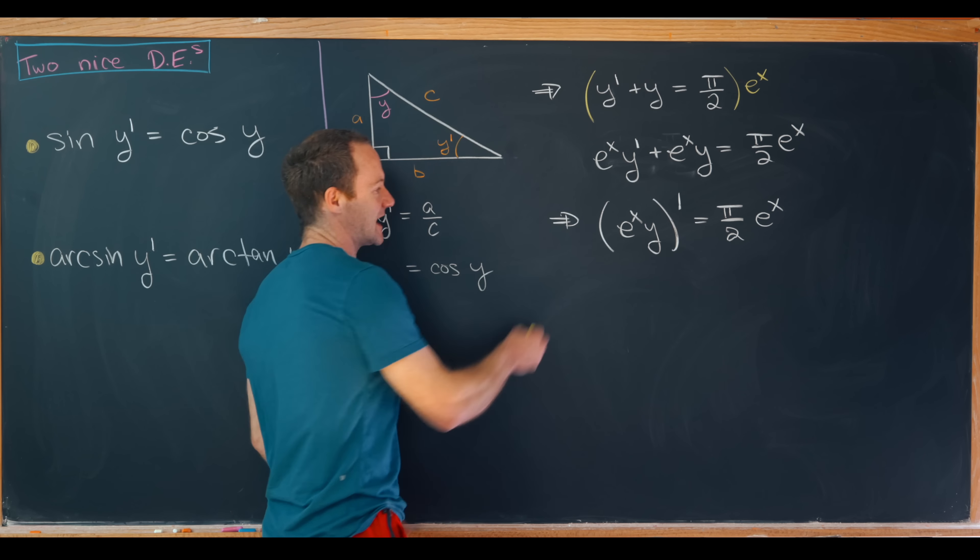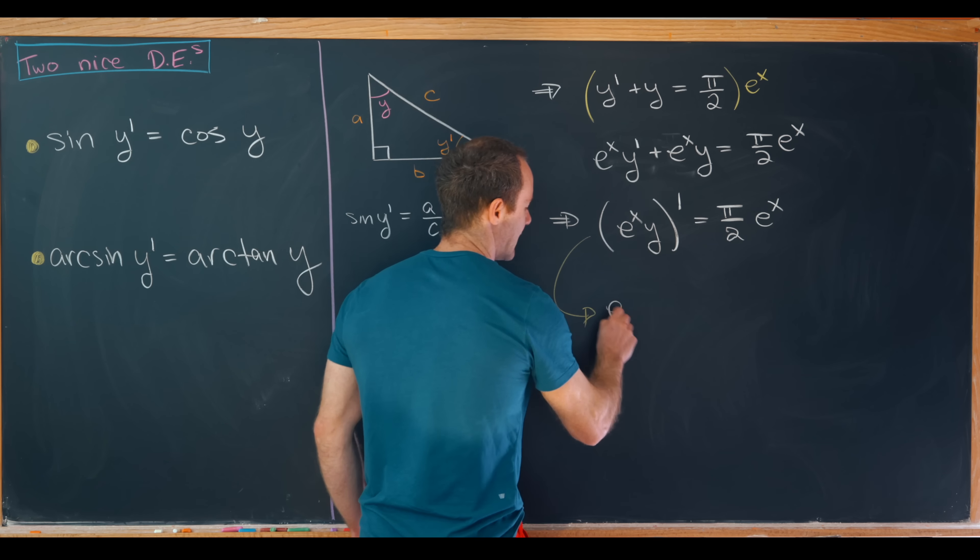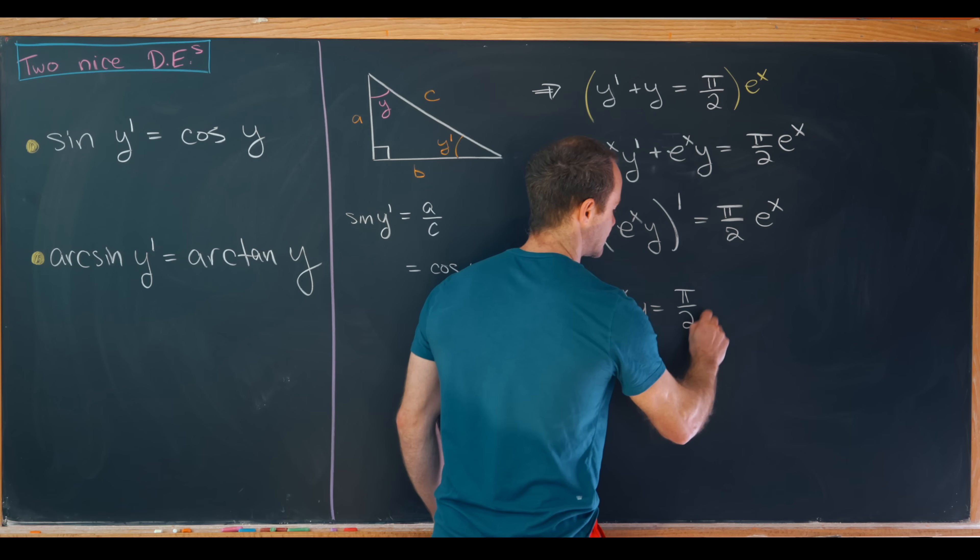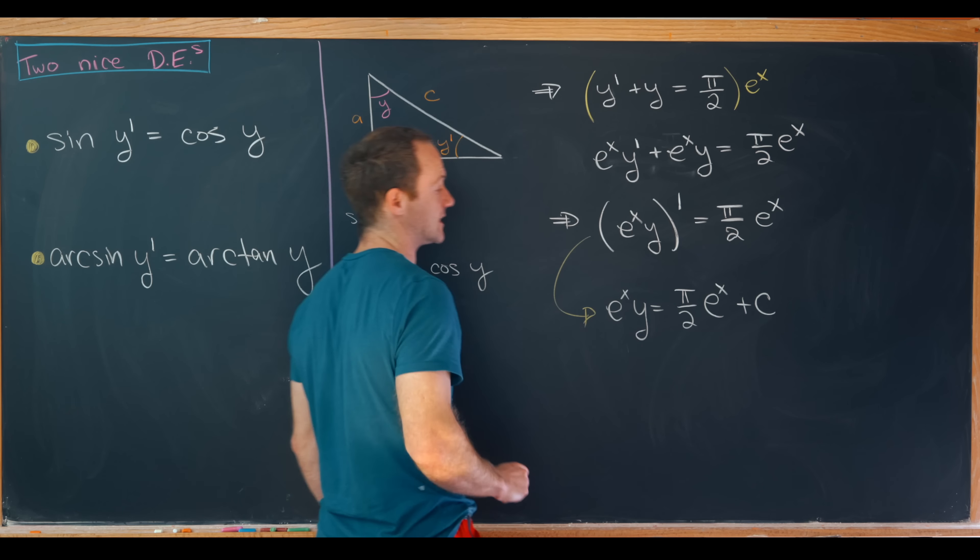Now we can take the anti-derivative of both sides and we're almost home free. That will give us e to the x times y is equal to pi over 2 times e to the x plus some constant c.